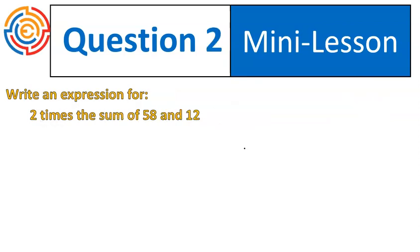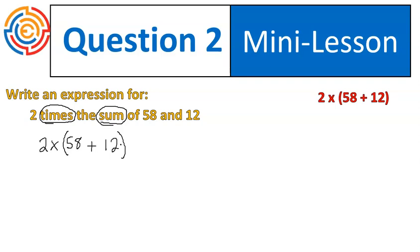Question number 2. 2 times the sum of 58 and 12. Again, we've got that word times, which tells us that we are doing 2 times something. Sum lets us know that we are going to be doing addition. And then we've got that 58 and 12. And once again, like our previous question, we are going to put grouping symbols around there to indicate that we're doing the addition first. So we're doubling or 2 times the sum of 58 and 12. There it is, a little bit neater.